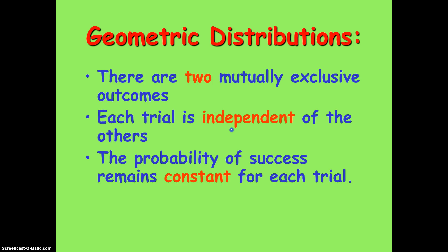Each trial is independent of the others, which means that if you do six trials and on the sixth trial you get a certain result, the outcome of the seventh trial is not affected by what you got on any of the previous trials. And the probability of success remains constant for each trial. Think of this as when you are flipping a coin — the probability of getting heads or tails is always 0.5, no matter whether it is your first or 100th trial.